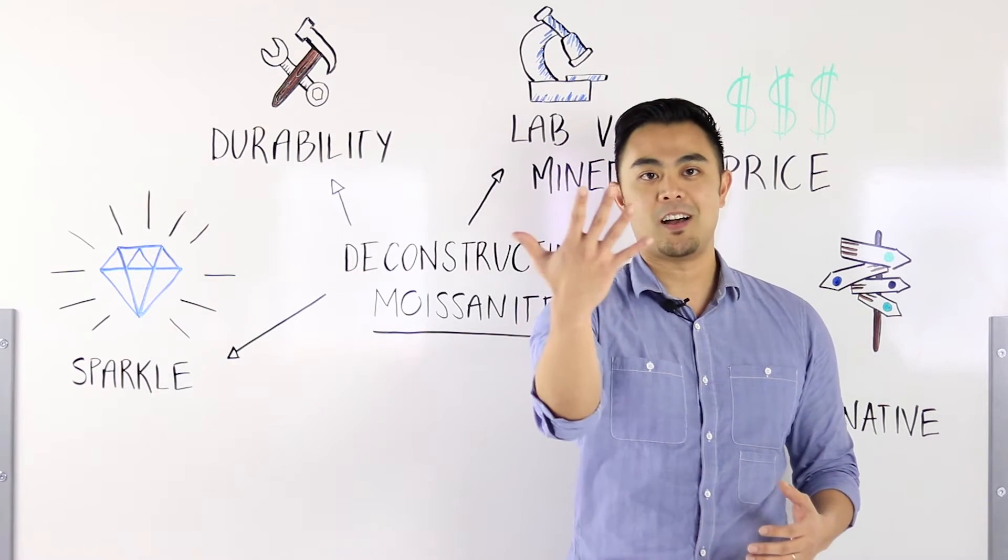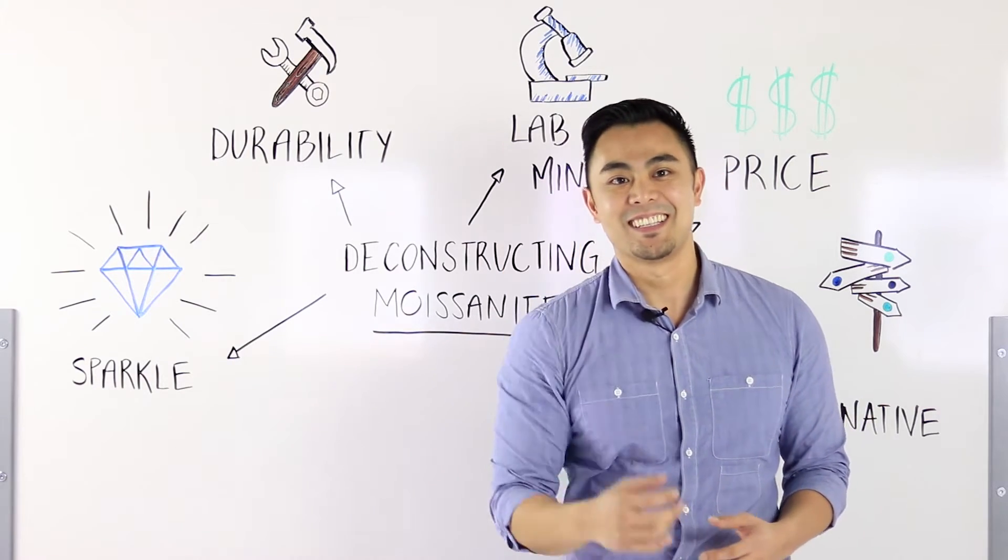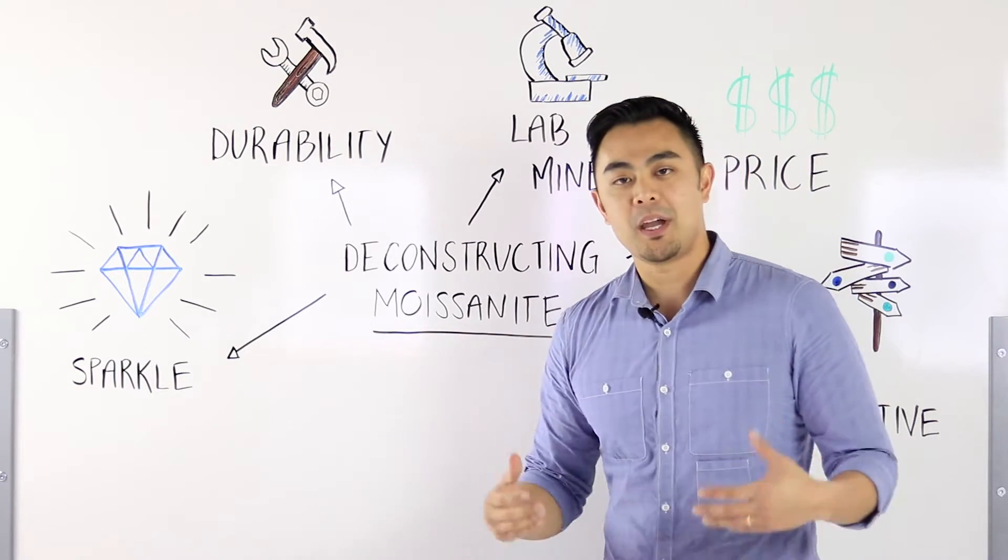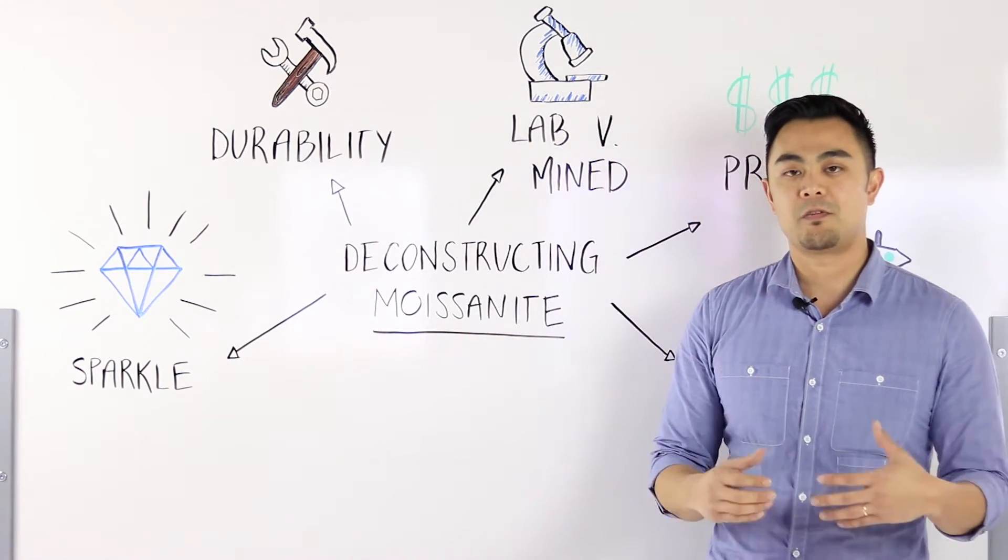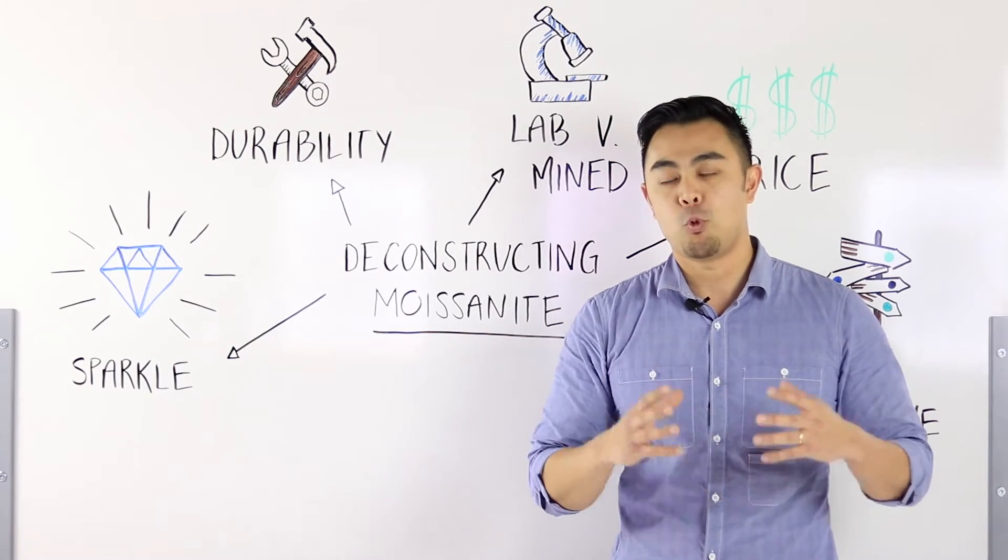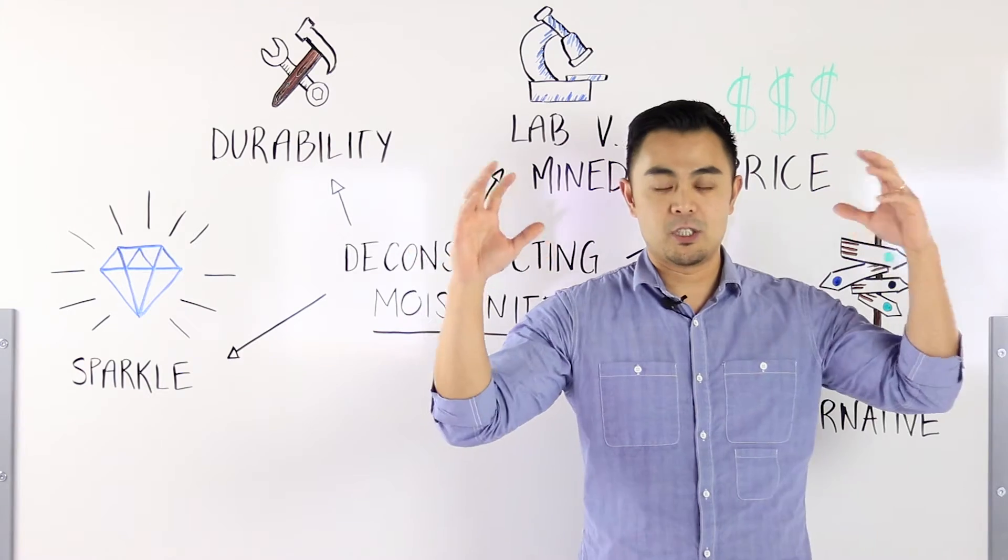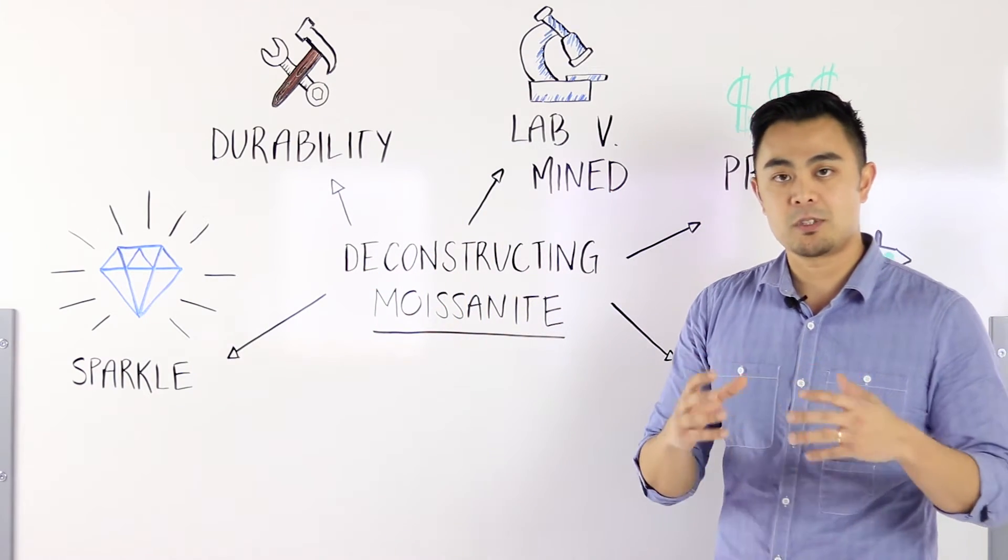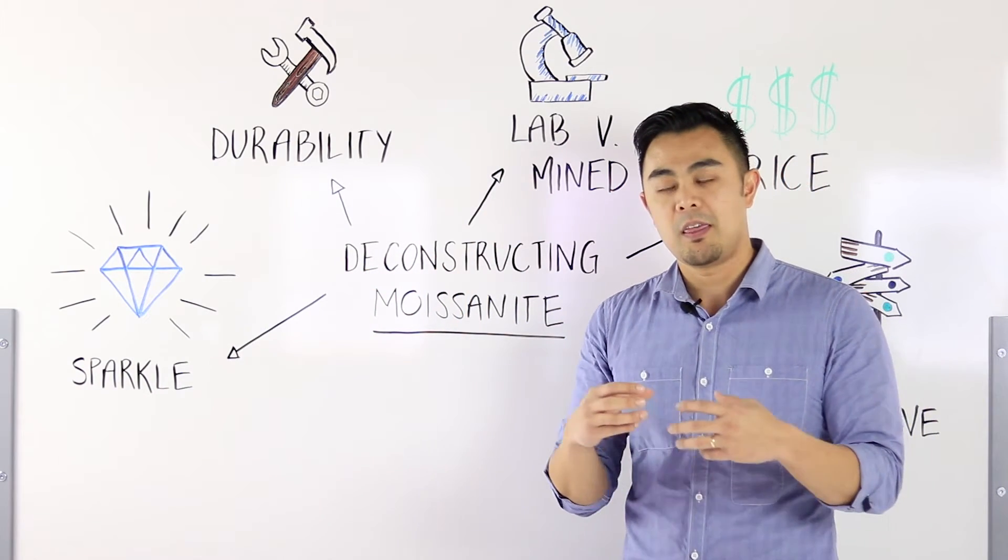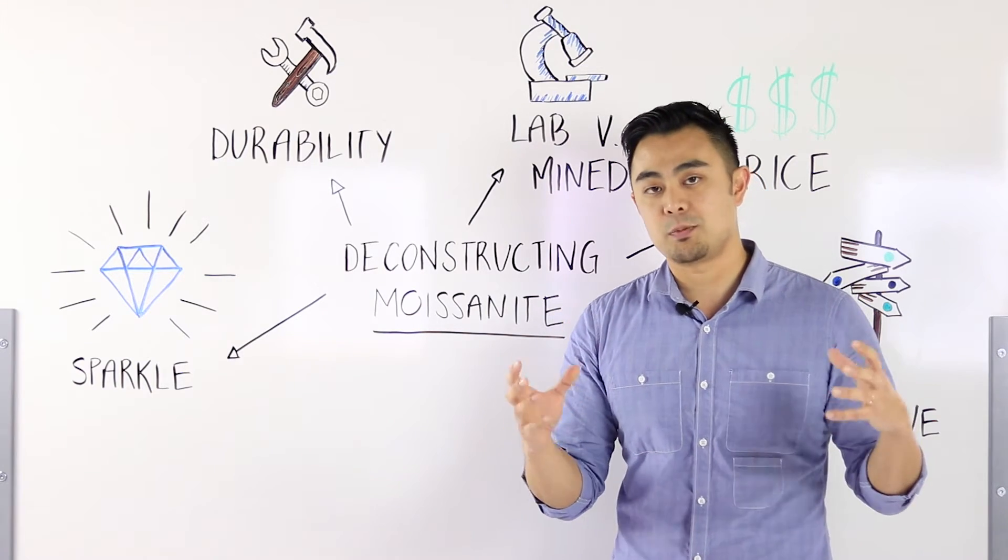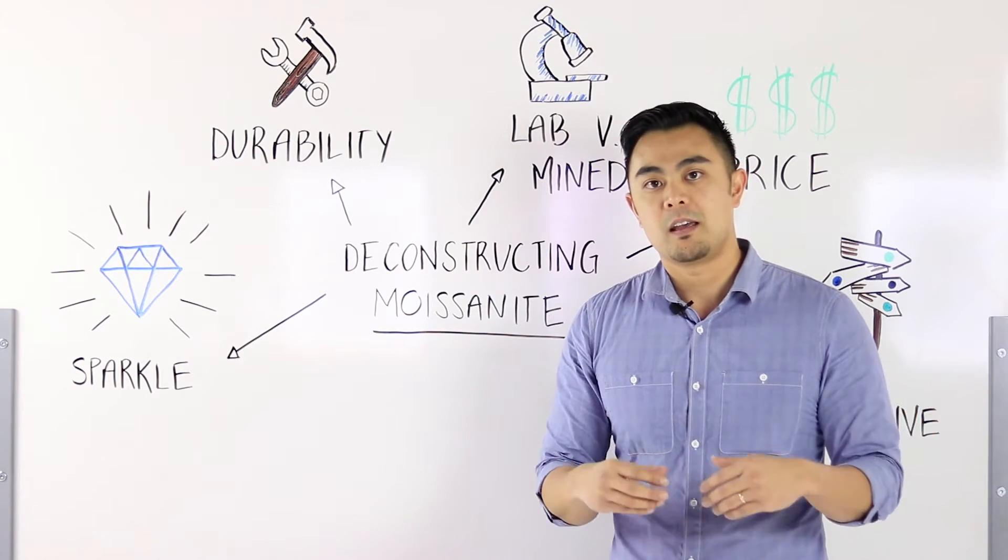First, let's start with sparkle. Basically, the sparkle is the reflection of light when light hits a gem and how it refracts that specific light. Sometimes the patterns are different, sometimes the color that is reflecting from that specific gem is different.